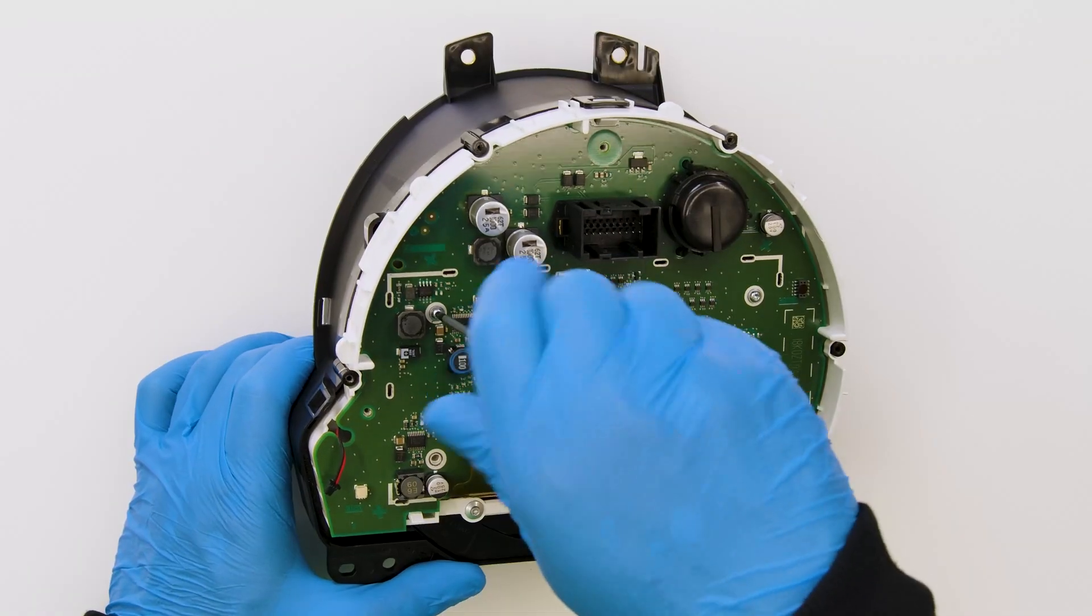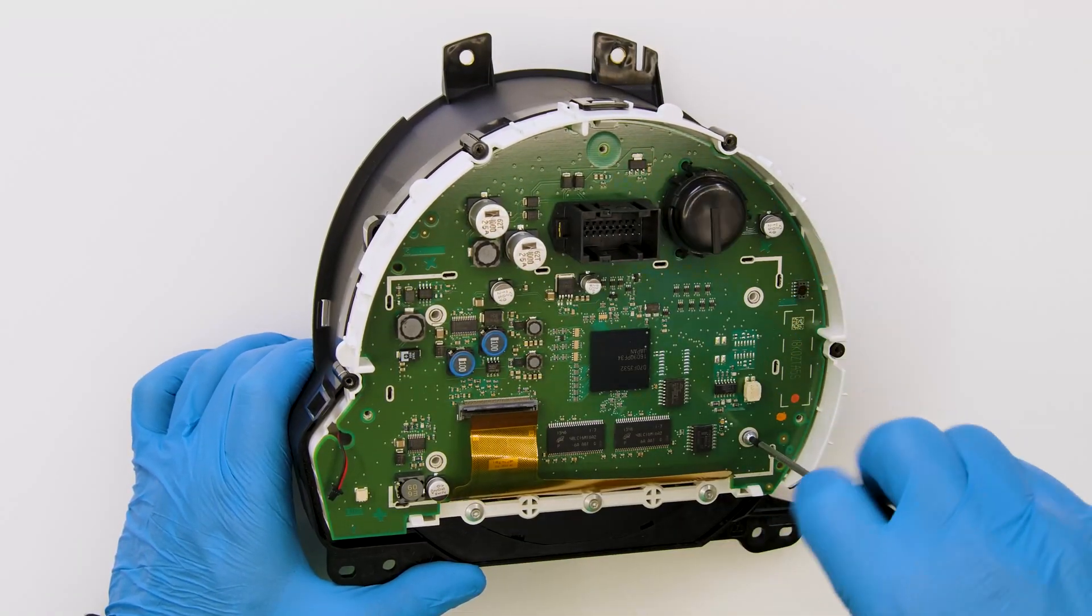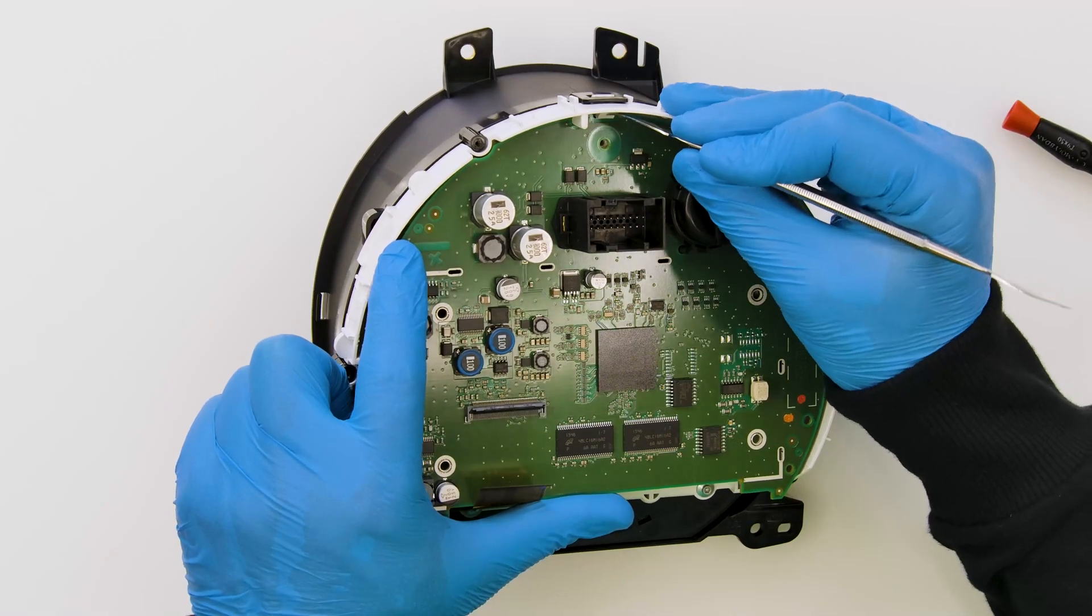With the Torx screwdriver undo the screws of the PCB and remove it with the head of the spudger.